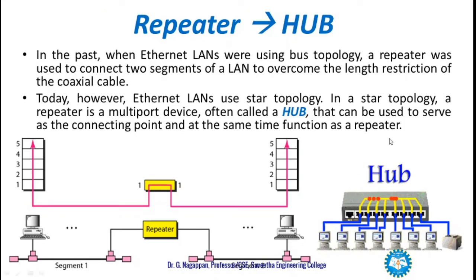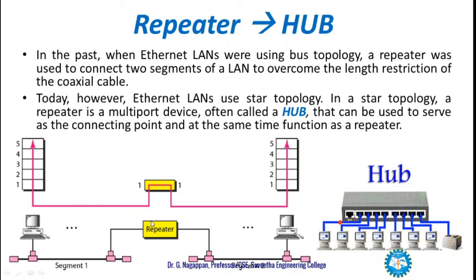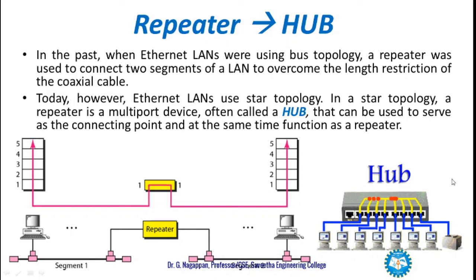When does a repeater become a hub? In the past, when Ethernet LANs were using bus topology, a repeater was used to connect two segments of a LAN to overcome the length restriction of the coaxial cable. Today, however, Ethernet LANs use star topology. In a star topology, a repeater is a multi-port device, often called a hub, that can be used to serve as a connecting point, and at the same time it functions as a repeater.